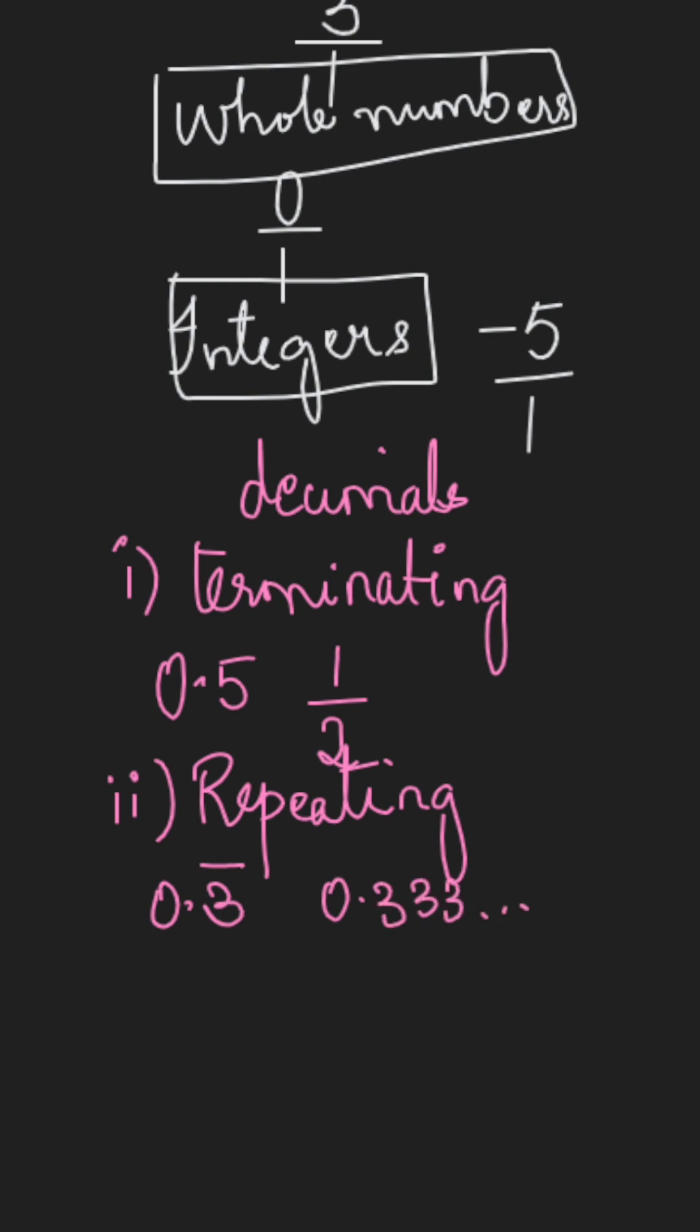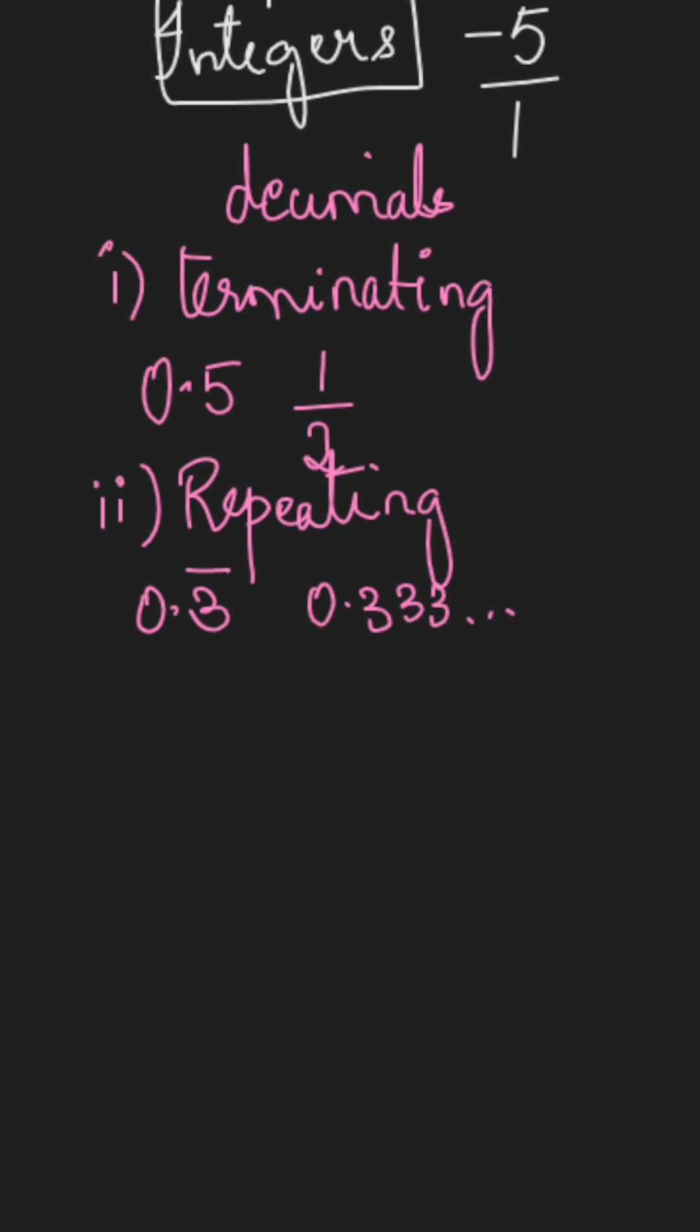These type of decimals can also be represented in the form of a fraction. For example, for this one, I can write this as 1 over 3. This fraction satisfies both the conditions to be a rational number. That is, the denominator is not equal to 0 and the numerator is an integer.